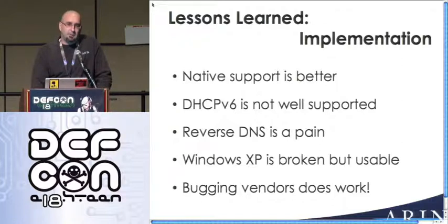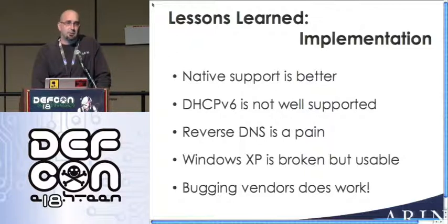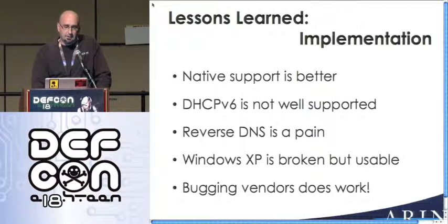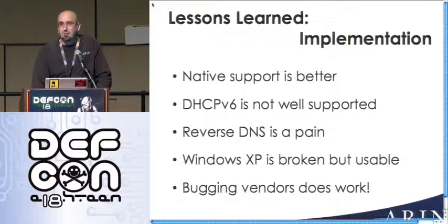Every RFP that ARIN puts out for equipment, bandwidth, whatever, lists IPv6 as a requirement. We will not do business with you if you do not support IPv6. That has gotten vendors to support V6 because they want to put ARIN's name on their website or t-shirt and say we're their customer. In order to do that, they have to do V6. If you have enough buying power in your organization, it will work for you too. Tell them you're going to use another transit provider or vendor because they have better V6 support — their sales guys are going to listen when they lose that commission.